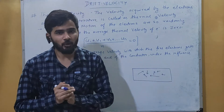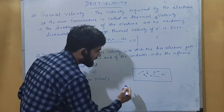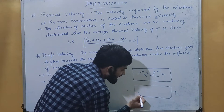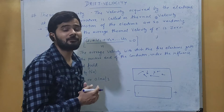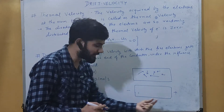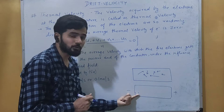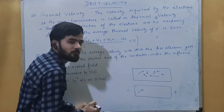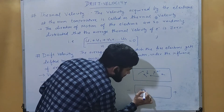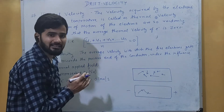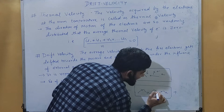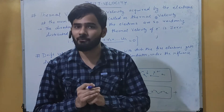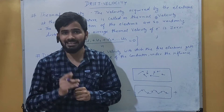Now in the same conductor, if we apply a negative potential on one end and a positive potential on the other, the electron will move under the effect of the electric field. Because of the negative potential, the electron gets repelled — the electron also has negative charge — and under the influence of this electric field it moves forward. If it encounters another electron there will be a collision, changing its path, but its direction remains the same. This movement of electrons under the effect of electric field is called drift velocity.